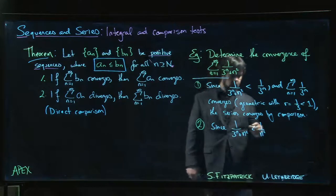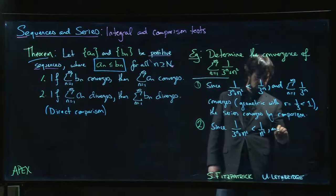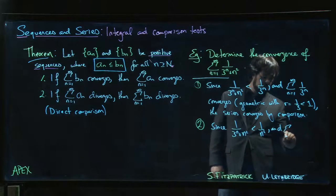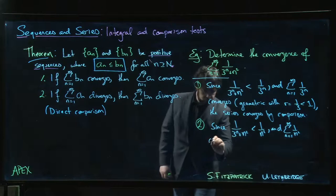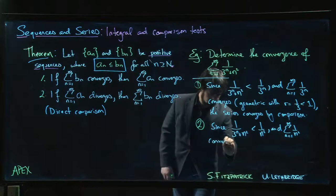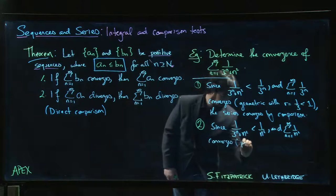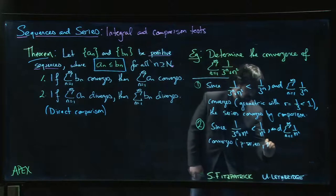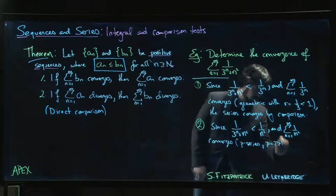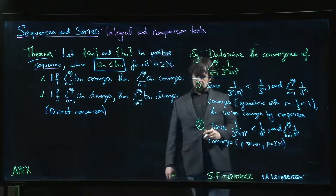And I know that this series, n going from 1 to infinity, 1 over n squared, that converges. Why? It's a p-series. p is equal to 2, which is bigger than 1.